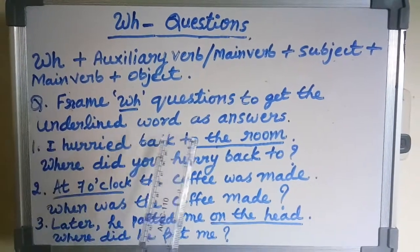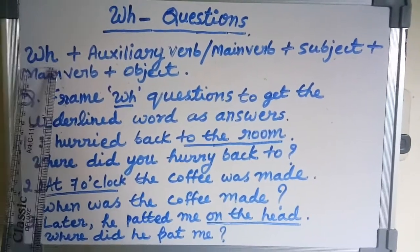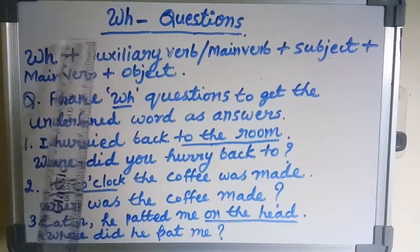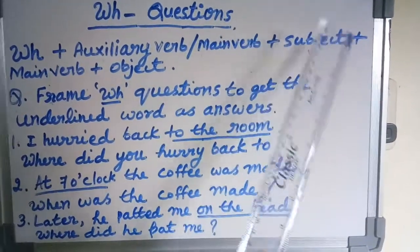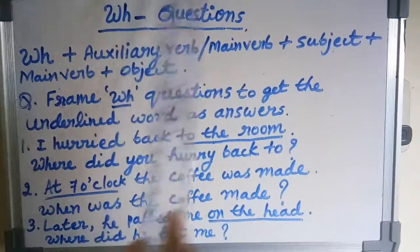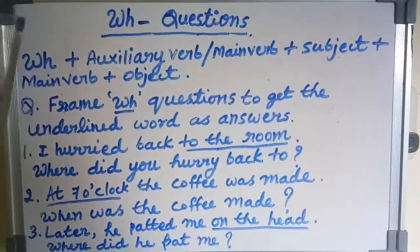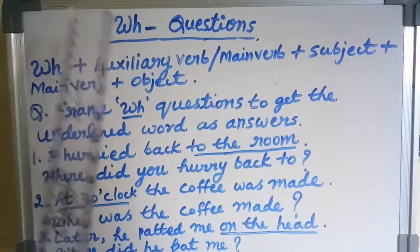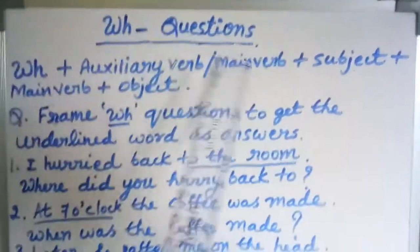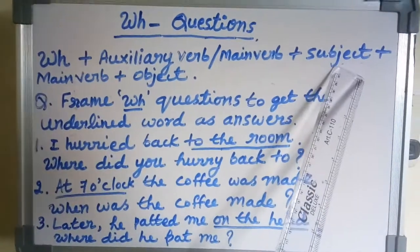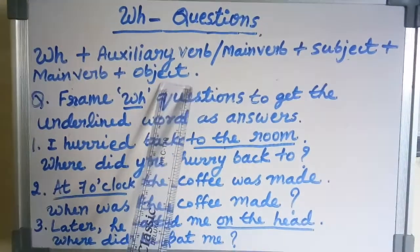How to frame a WH question to get the underlined word as the answer? Here is a small formula. First, write the WH word — what, where, when, why, who, how, whatever it is. Next, write the auxiliary verb. If there is no auxiliary verb, then write the main verb. After that, write the subject. If there is an auxiliary verb, then after the subject write the main verb. Finally, write the object or remaining part of the sentence.